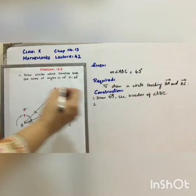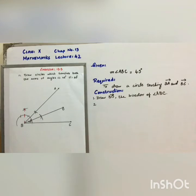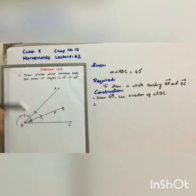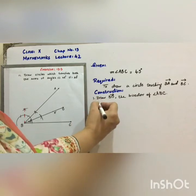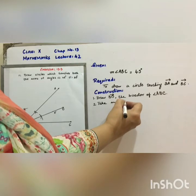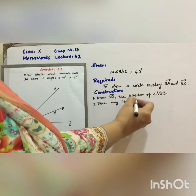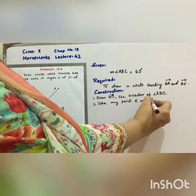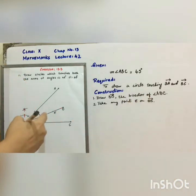In step number 2, we will take any point E on ray BD. Take any point E on ray BD which is the bisector of angle ABC.